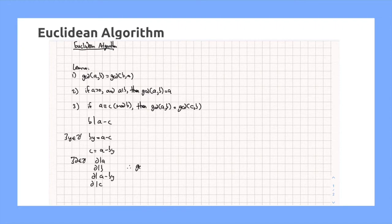Therefore, the greatest common divisor of A and B is also the greatest common divisor of B and C. Now, having these three simple facts, we can actually explain precisely how the Euclidean algorithm works.